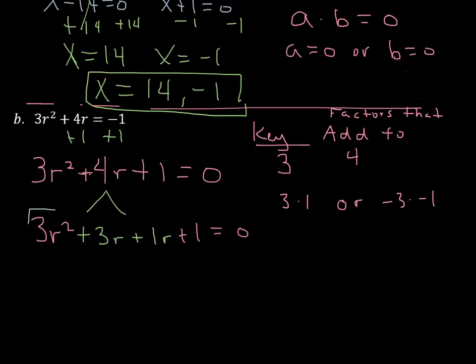And now we're going to group our first two terms together and our second two terms together, and we're going to factor by grouping. What can we take out of our first two terms? We can take out a 3r. It's like dividing each of these by 3r. These are going to cancel. r squared divided by r is just r, plus 3r divided by 3r. That gives us just a 1. Anything divided by itself is just 1.